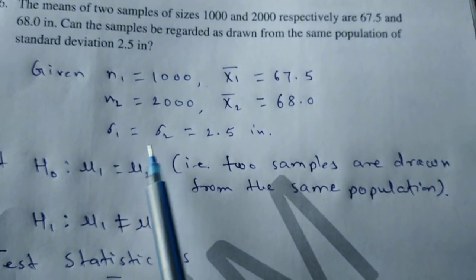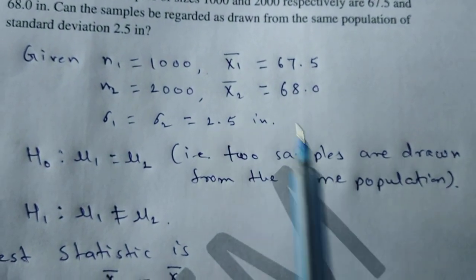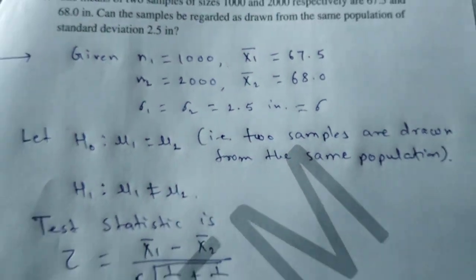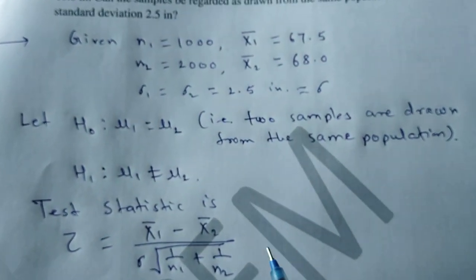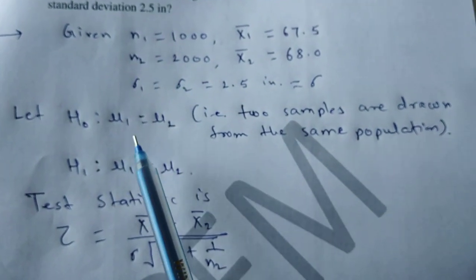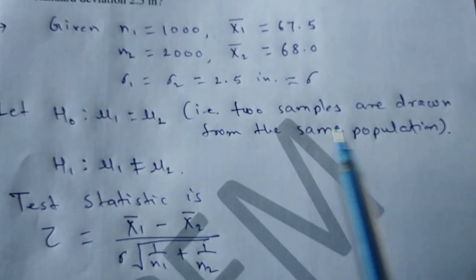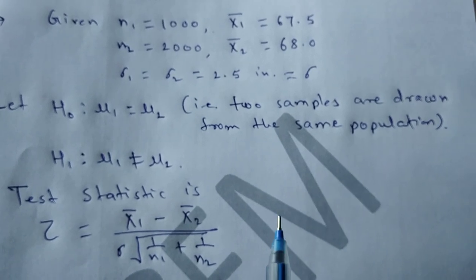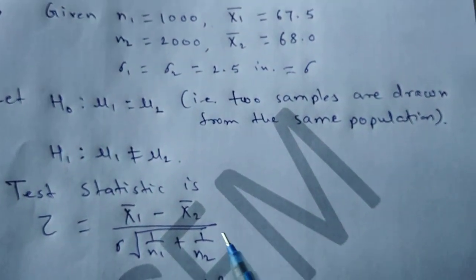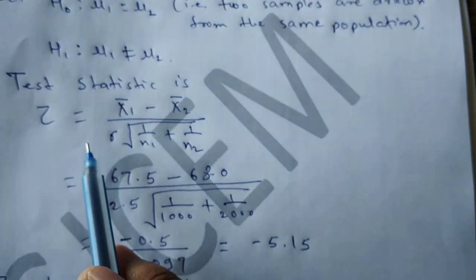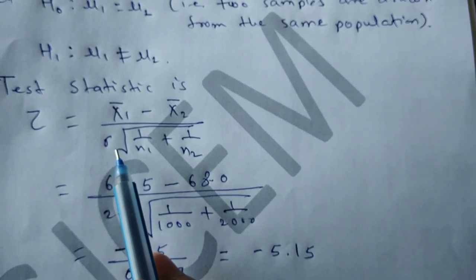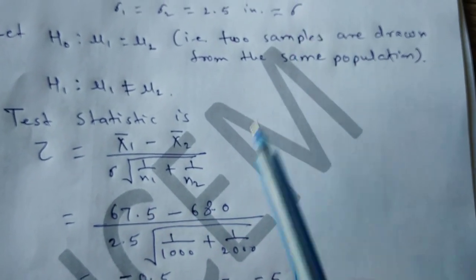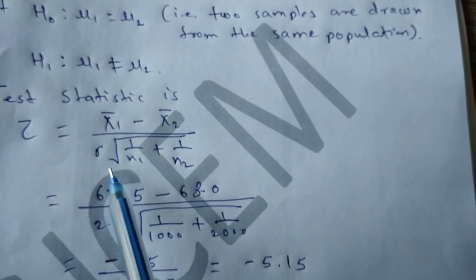Since sigma1 equals sigma2 equals sigma, we consider the null hypothesis H0 as mu1 equal to mu2, meaning the two samples are drawn from the same population. The alternate hypothesis H1 is mu1 not equal to mu2. Since the standard deviations are equal, we use the second formula: Z equal to x1 bar minus x2 bar divided by sigma into square root of 1 by n1 plus 1 by n2.